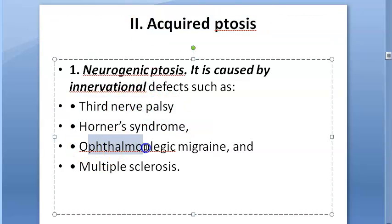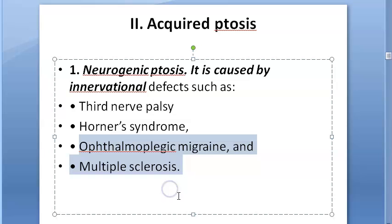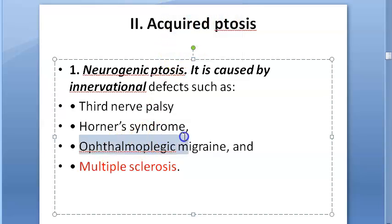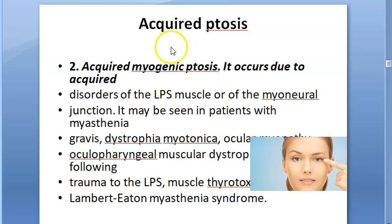Ophthalmoplegic migraine and multiple sclerosis are the remaining neurogenic causes listed. The textbook does not give much detail on these, but both can cause ptosis. Multiple sclerosis is an autoimmune condition where the protective myelin covering of nerves is destroyed, so the nerves become affected.